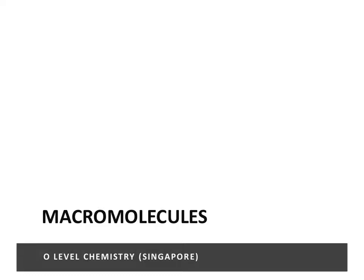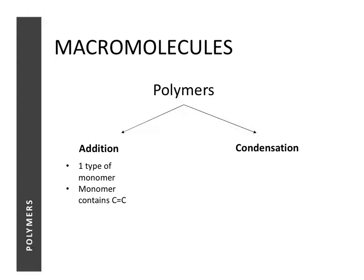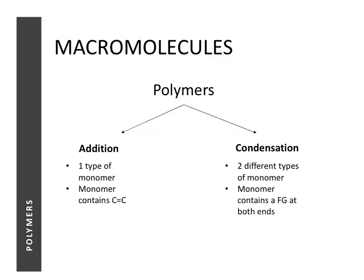In this lesson we're going to carry on with our study of macromolecules, or more specifically polymers. There are two kinds of polymers: addition polymers and condensation polymers. In the last lesson we looked at addition polymers — how they are formed when multiple alkenes come together and undergo addition polymerization. One feature is that there's only one type of monomer, and the monomer must have a carbon-carbon double bond, so it is unsaturated.